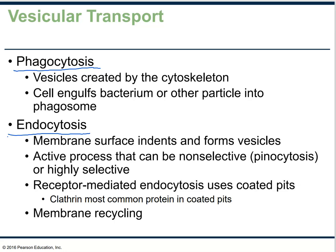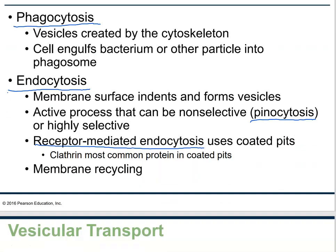Endocytosis is the general term. If the cell eats something solid, it's phagocytosis; if the cell eats something liquid, it's pinocytosis. And if we're using a receptor to internalize material, we call it receptor-mediated endocytosis — more specific. Endocytosis can also be part of membrane recycling, because every time you do endo- or exocytosis a little patch of membrane is involved, so they sort of balance each other out.